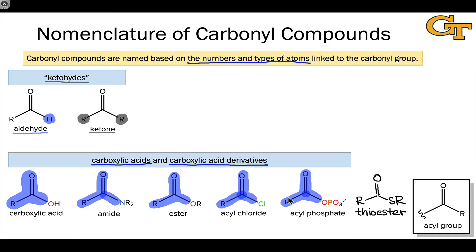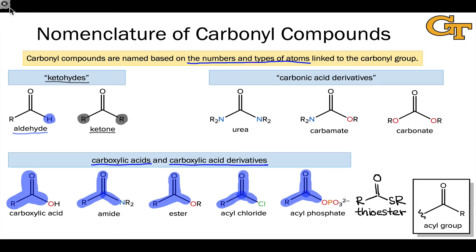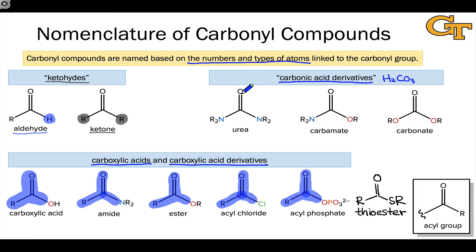If we replace the other R group with yet another heteroatomic group, we arrive at what are called the carbonic acid derivatives. Carbonic acid has the formula H2CO3, and if you draw a Lewis structure for it, you'll realize that it's a carbonyl group flanked by two hydroxyl groups. Carbonic acid derivatives are similar, but contain two heteroatomic groups linked to a central carbonyl carbon. For example, urea contains two amino groups linked to the carbonyl carbon.